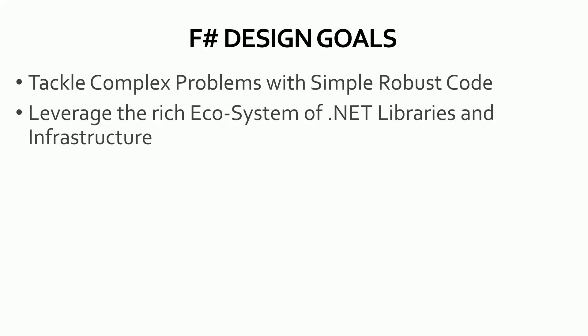The second design goal is that it allows the user to leverage the rich ecosystem of .NET libraries and infrastructure. This is really useful because the .NET ecosystem is very rich and battle-tested — there are so many libraries and tools. .NET Core runs well on Linux, on all platforms, on mobile, on web. F# was designed to leverage all of that goodness.